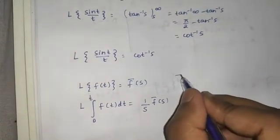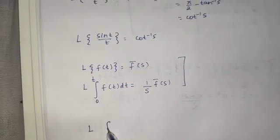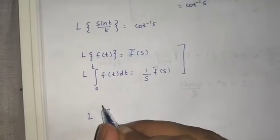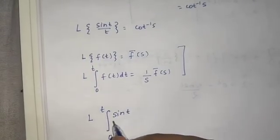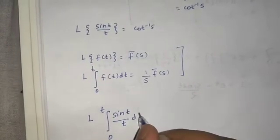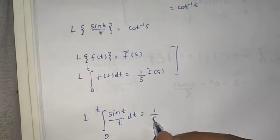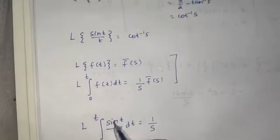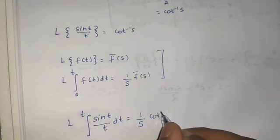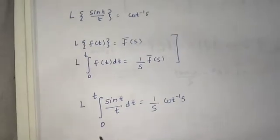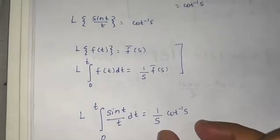Using this rule, the Laplace of the integral from 0 to t of sin(t)/t dt will be (1/s) times cot⁻¹(s), since we are doing one integration and the Laplace of sin(t)/t was cot⁻¹(s). So the final answer is (1/s) cot⁻¹(s).